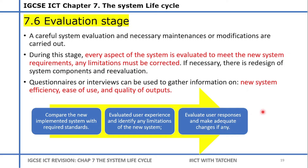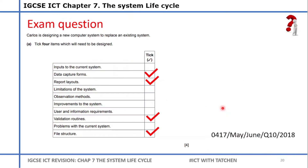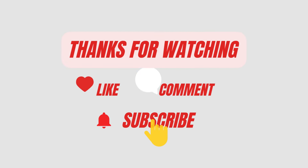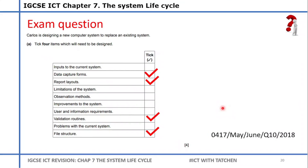Now let's look at some exam questions. From 2018: Carlos is designing a new computer system to replace an existing system. Tick four items which would need to be designed in a computer system. The answer includes: data capture forms (yes), report layout (yes), validation routines (yes), and file structure (yes). Input to the current system — no, you want input to a new system. Observation method — that's for the analysis stage. User information requirement — also analysis stage.